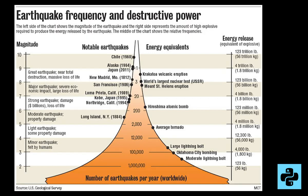The amplitude of the largest recorded wave of an earthquake at a specific distance is called the Richter magnitude. Under the Richter scale, each order of magnitude is 10 times more intensive than the last one. It means that a 2 is 10 times more intense than a 1, and a 3 is 100 times greater than a 1.